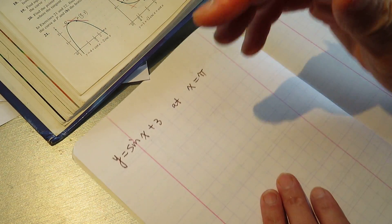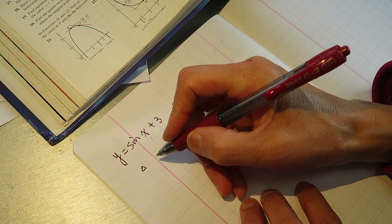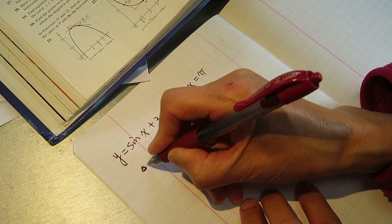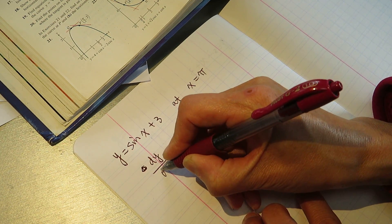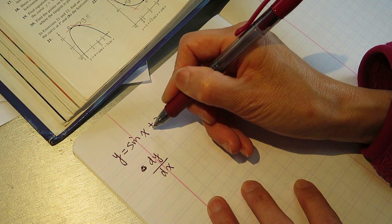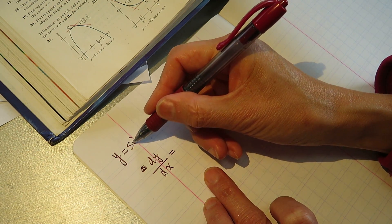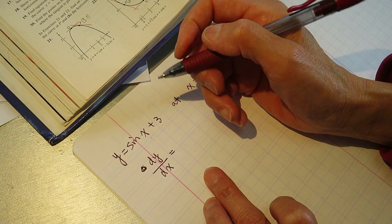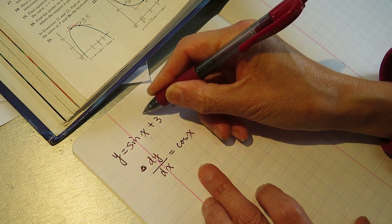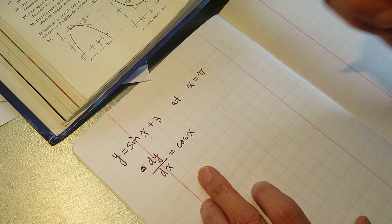Okay, so first we want to know the derivative dy over dx. The derivative of this function is, we know sin x, the derivative of sin x is cosine x and plus 3 we can ignore it, right? So we know the derivative of this.